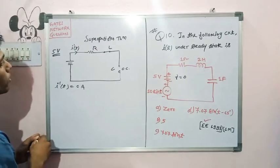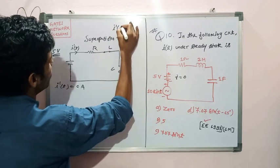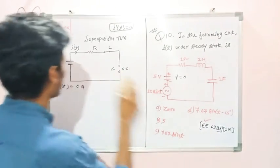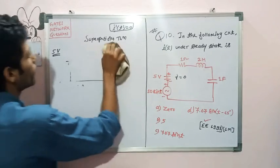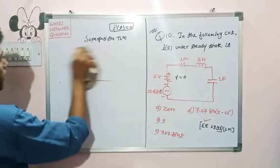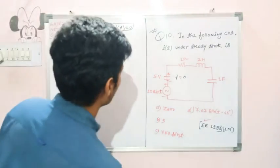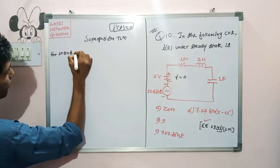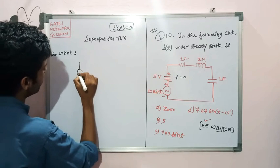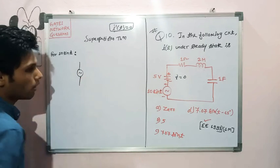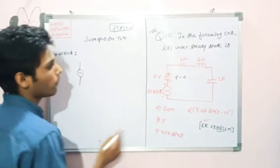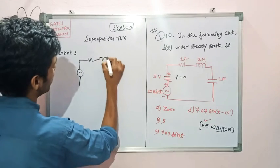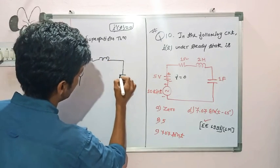Now we need to calculate the current due to the 10sinT voltage source. We look at the circuit again for 10sinT. Since this is a time-varying signal, steady state condition does not apply to the elements in the same way — the source is an AC, time-varying source.